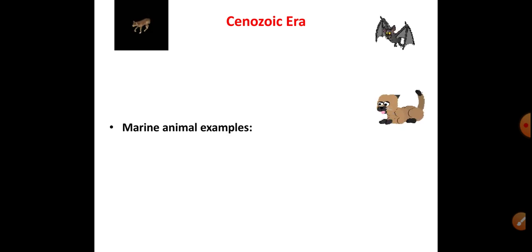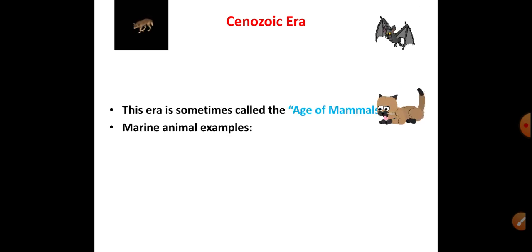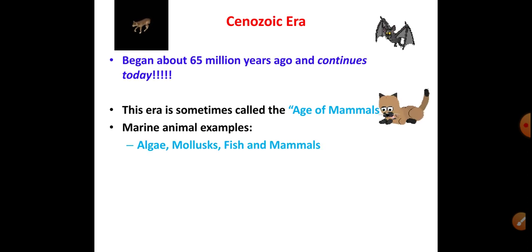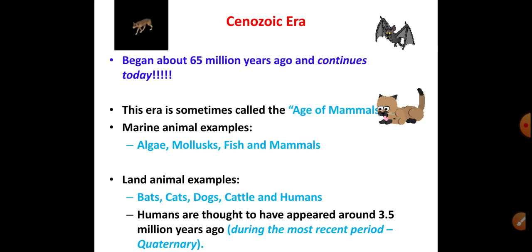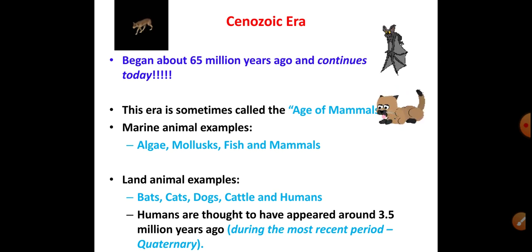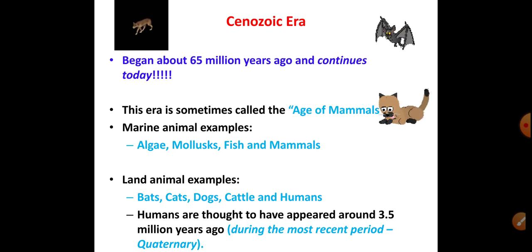In the Cenozoic era, mammals like bats, cats, and dogs evolved. This era is sometimes called the 'Age of Mammals.' It began about 65 million years ago and continues till today. Marine animals such as algae, mollusks, fish, and mammals were present. Land animals including bats, cats, dogs, cattle, and humans all evolved. Humans are thought to have appeared around 3.5 million years ago, during the most recent Quaternary period.